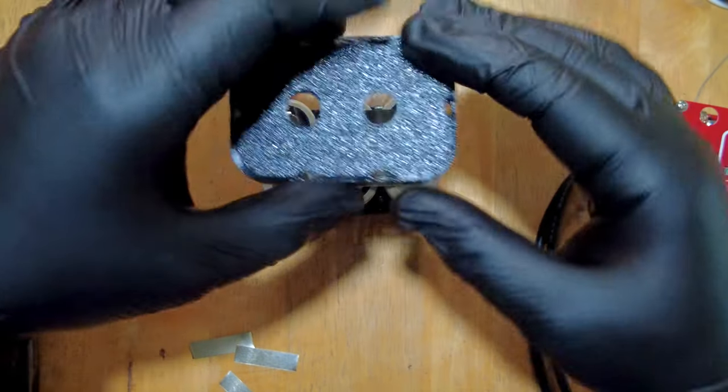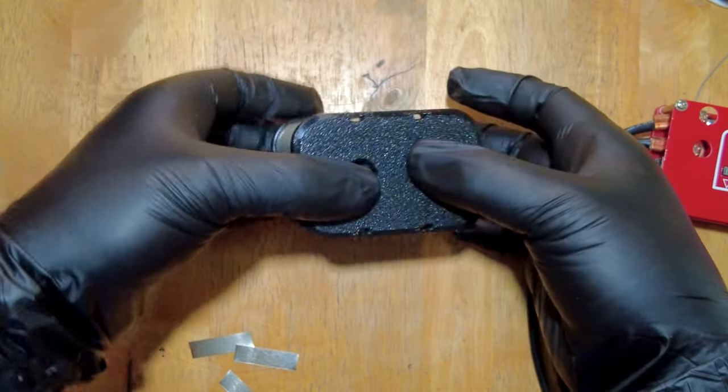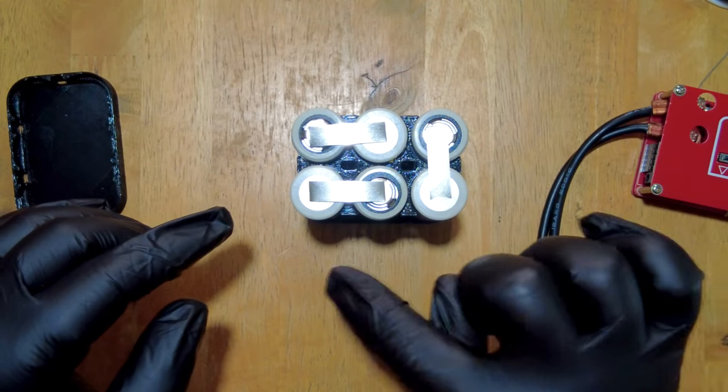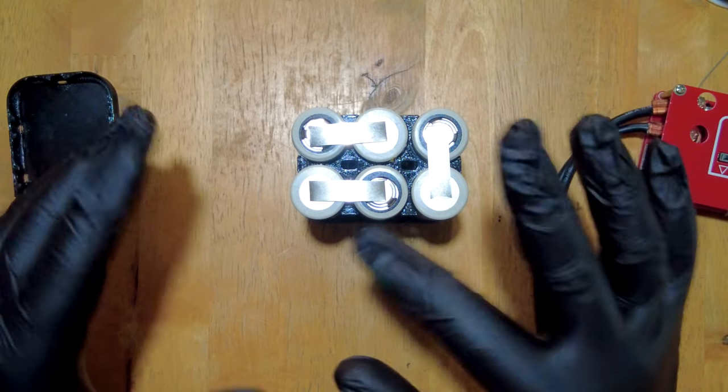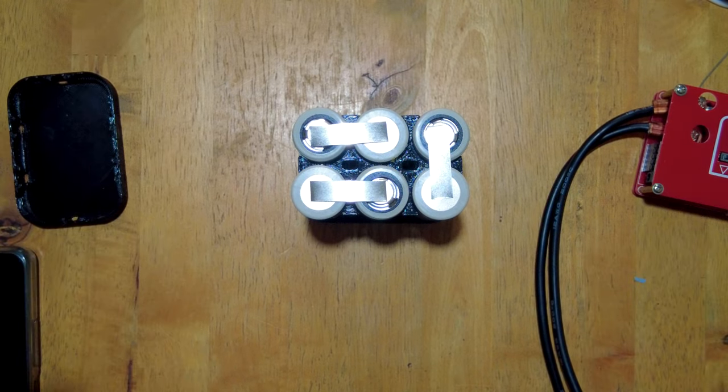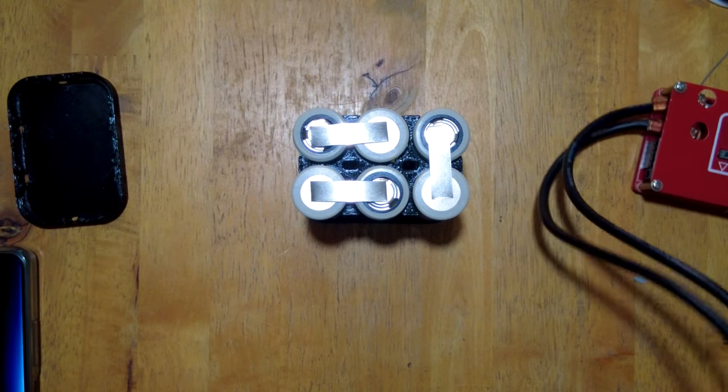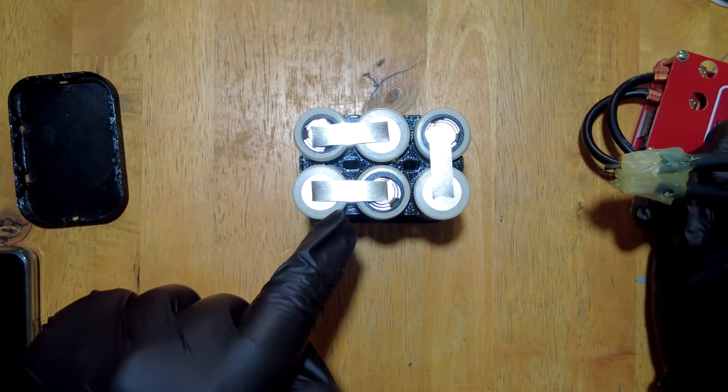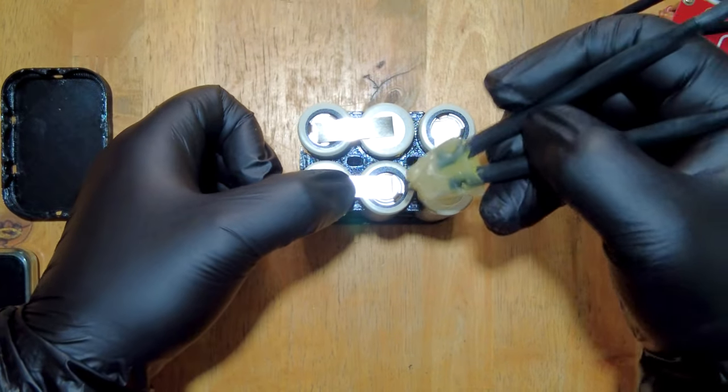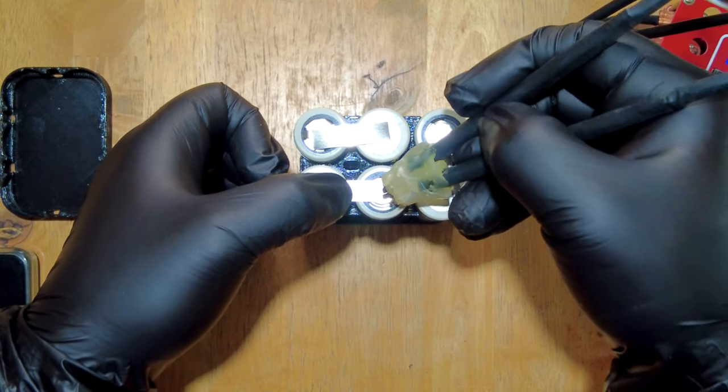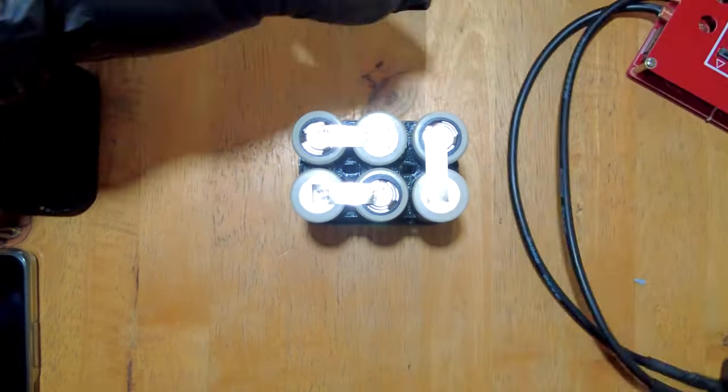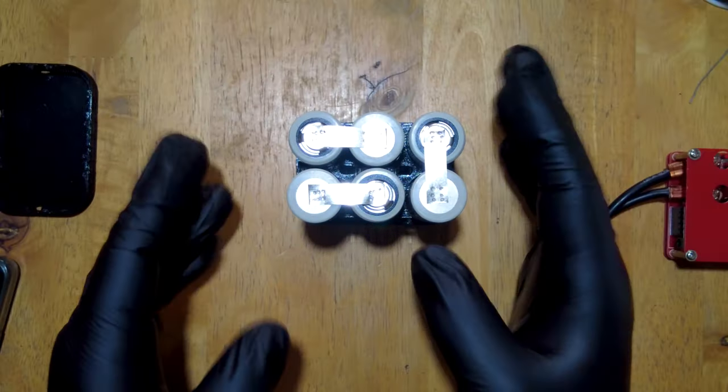So now we've done this side, we are going to put that cap back on and flip it over so that we can work on the other side. You have to be very careful because if you accidentally put your nickel strips on the second side in the wrong place, it will cause sparks to fly.